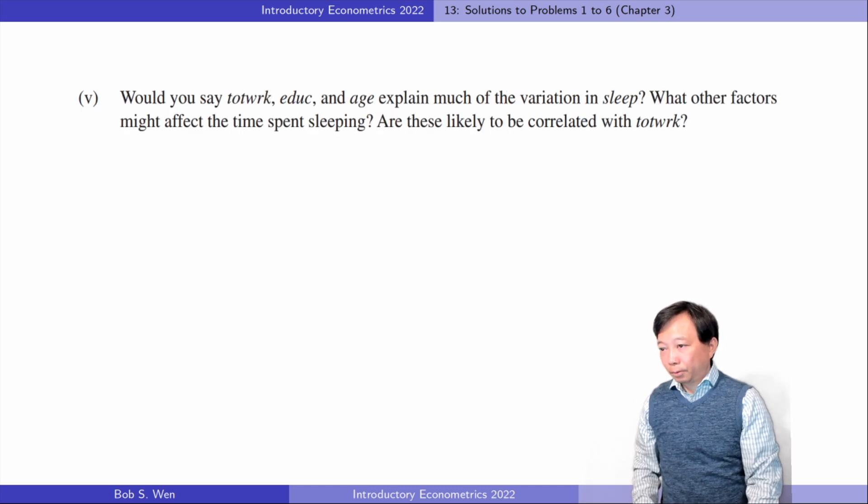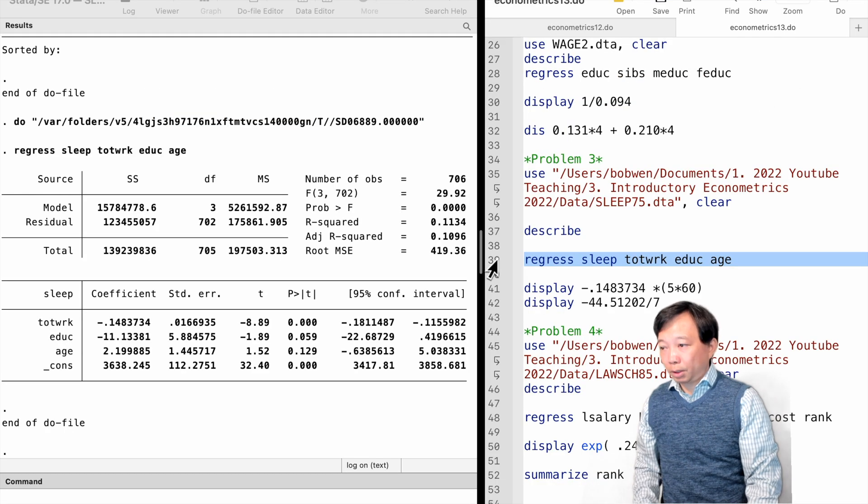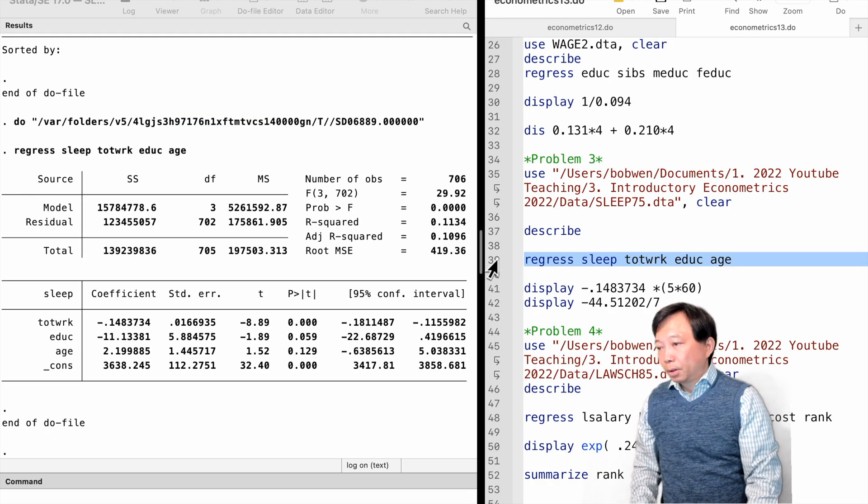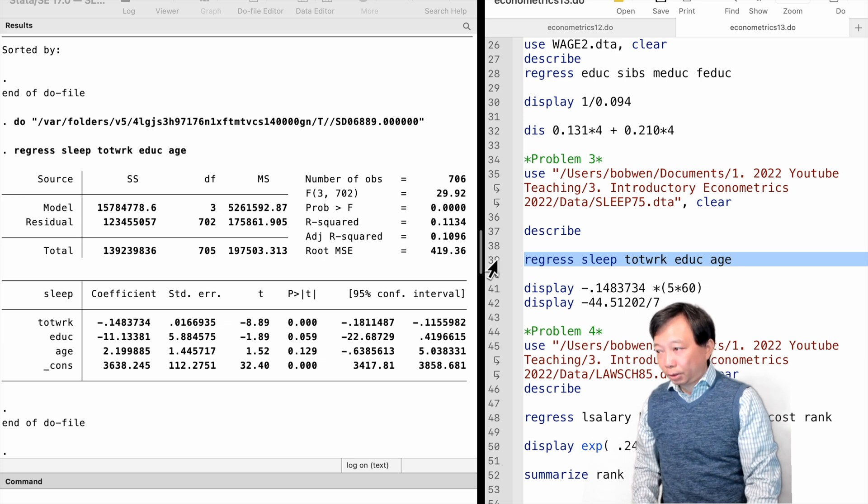For the fifth question, the R squared is 0.113. It means 11.3% of the variation in sleeping time can be explained by the variation in the three explanatory variables.